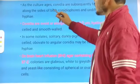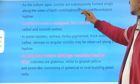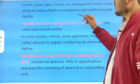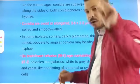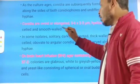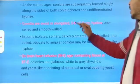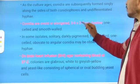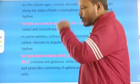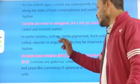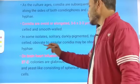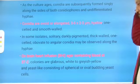As the culture ages, conidia are subsequently formed singly along the sides of both the conidiophores and undifferentiated hyphae. Conidia are ovoid or elongated in shape, with size varying from 3 to 6 microns in length and 2 to 3 microns in width — single-celled with smooth walls.